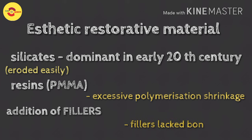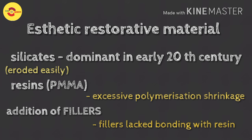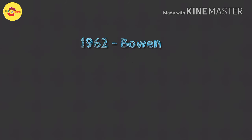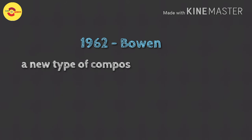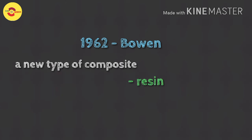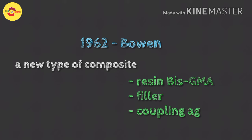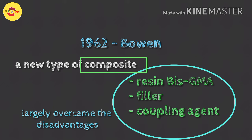The fillers lacked bonding to the surrounding resin material. In 1962, Bowen developed a new type of composite material that included resin bis-GMA instead of PMMA as matrix, filler, and a coupling agent to bind both filler and bis-GMA. This type of composite material largely overcame all the difficulties mentioned above.